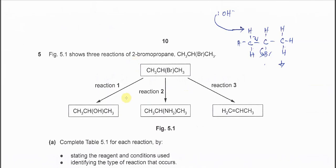Reaction 1 is to form alcohol, so we know that the bromine has been substituted by OH. Second reaction is to form the amine, so the bromine is substituted by NH2. And reaction 3 is elimination reaction because the H and Br are removed to form a C=C double bond.